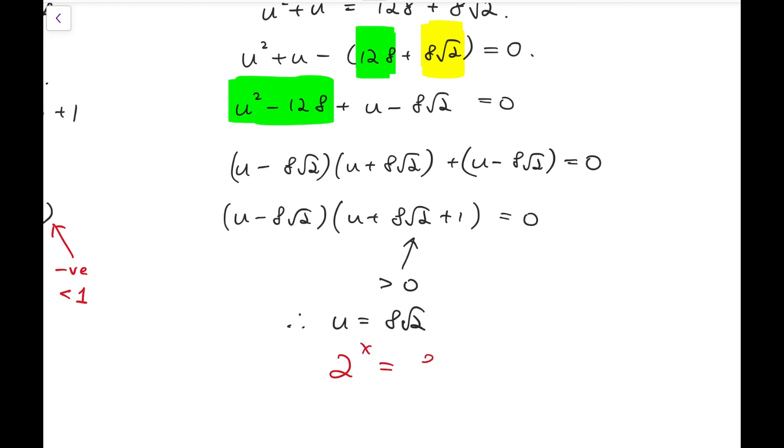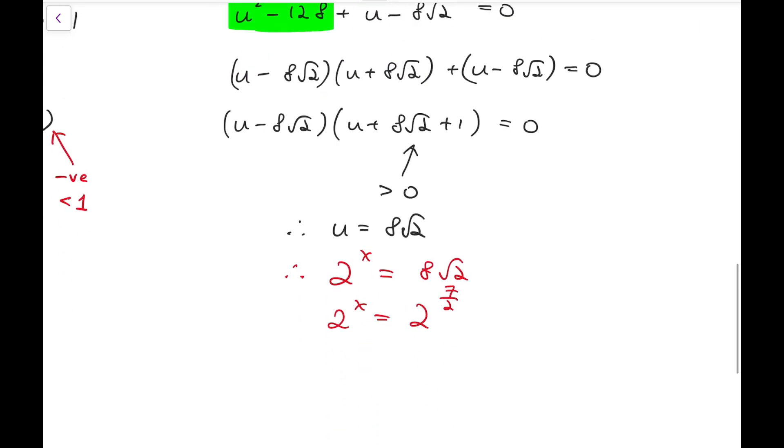Which means 2 to the x is equal to 8 root 2, which is 2 to the power of 7 over 2, or you can say 3.5, and so that's our answer.